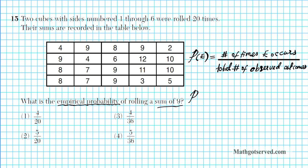So that's how you calculate empirical probability. So in this problem, we are calculating P of 9. How many 9's do we have in this table right here? Let's go ahead and count it. We have 1, 2, 3, 4, 5. We have 5 nines. So the number of times that 9 occurred is 5 times divided by the total number of observed outcomes. How many sums were written down? 20 of them.